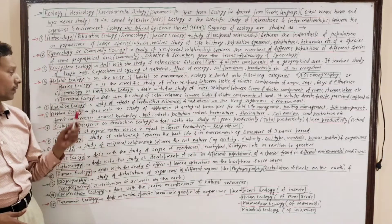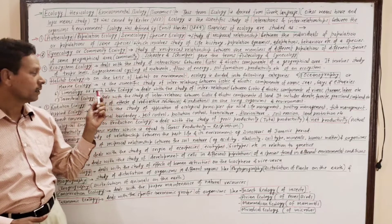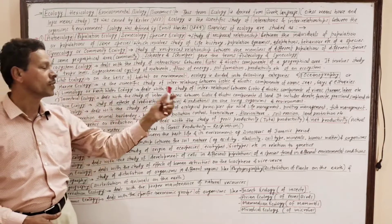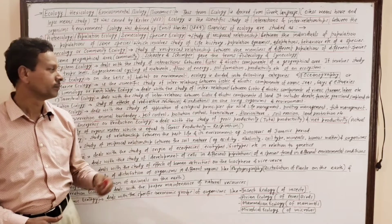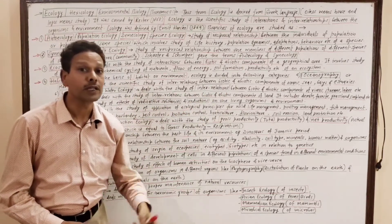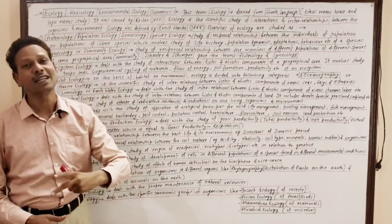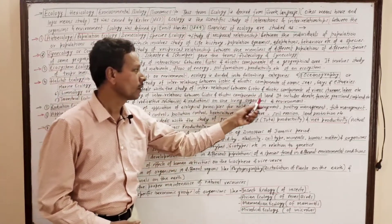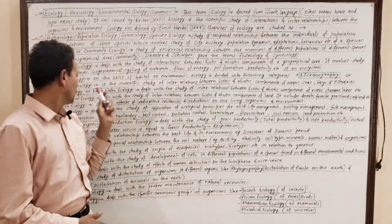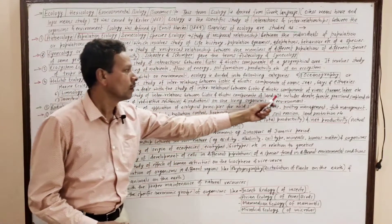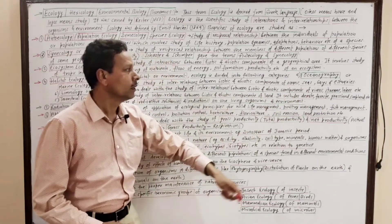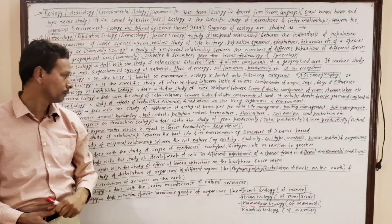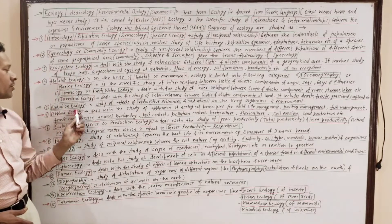Terrestrial ecology is the category of habitat ecology which deals with the study of interrelations between biotic and abiotic components of land. It involves desert ecology, forest ecology, grassland, and cropland ecology.